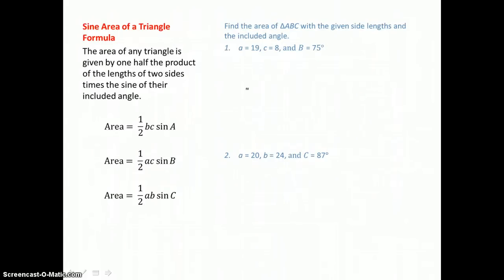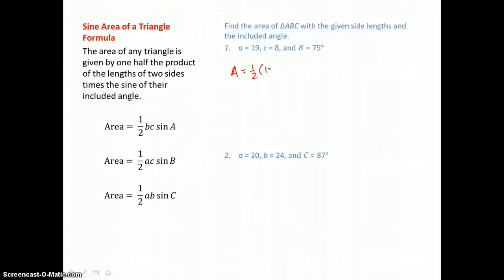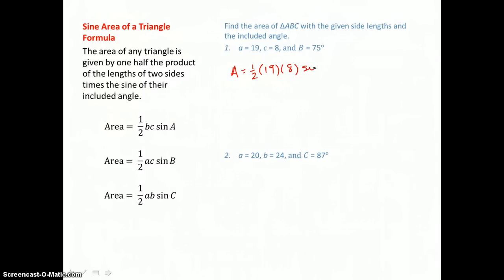Now we're going to use our area formulas from the first part of this lesson to find the area of triangle ABC. We multiply one-half times the lengths of the two given sides times the sine of the included angle, and put that in our calculator to approximate the area to two decimal places. So: 0.5 times 19 times 8 times the sine of 75 degrees gives 73.41 square units for this triangle.